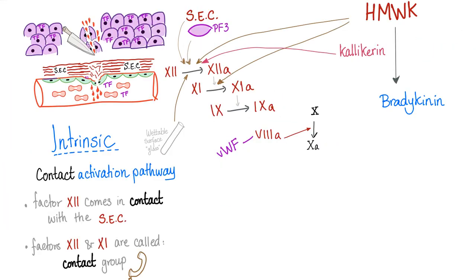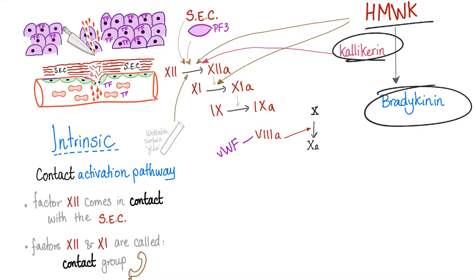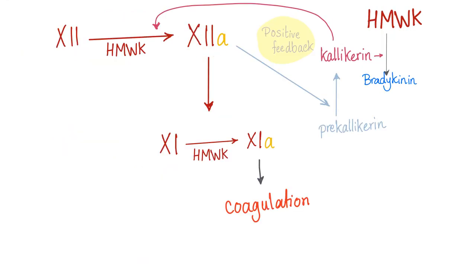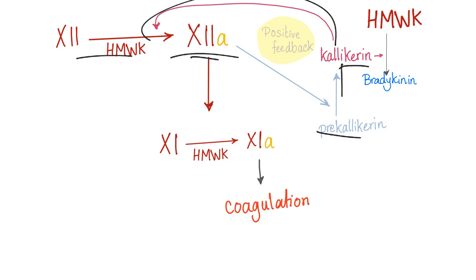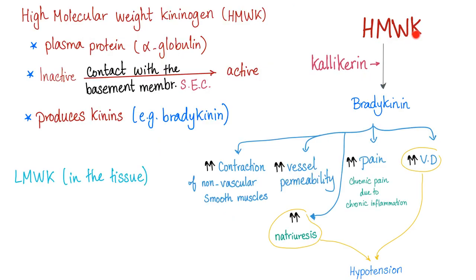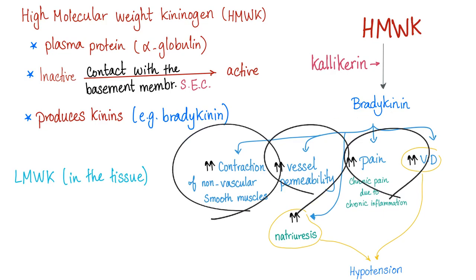Quick review of the previous videos. We start with high molecular weight kininogen converting into bradykinin thanks to kallikrein. High molecular weight kininogen activates factor 12 and 11. Kallikrein only activates factor 12. Kallikrein activates factor 12 into activated factor 12, which activates pre-kallikrein into kallikrein, which activates factor 12 again and again — a positive feedback loop. High molecular weight kininogen, by kallikrein, produces bradykinin, which does all of its downstream effects.